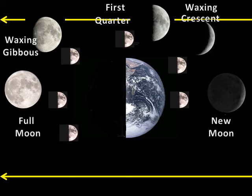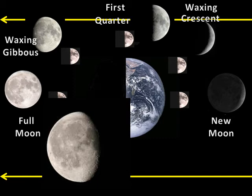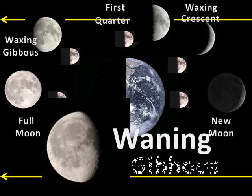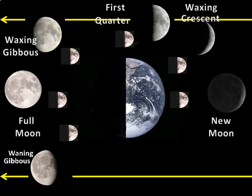The moon continues its journey. Since the moon has shown us all of its lit side, the lit side must decrease from night to night. When the moon moves to this location, we say that the light is waning — a word still sometimes used today that means getting smaller. This moon is waning, but we still see more than half of the lit side, so the moon remains gibbous. We call this moon the waning gibbous. Notice that the lit side of the moon is now on the left. When the lit side is on the left, the amount of light the moon is reflecting to the earth is decreasing.